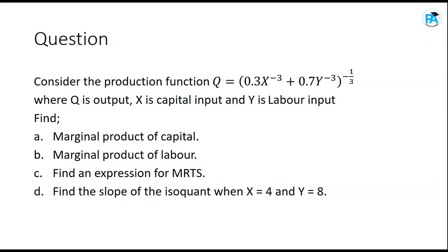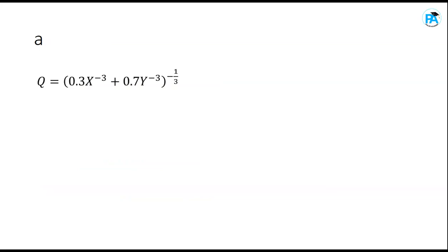We also need to (c) find an expression for MRTS, and (d) find the slope of the isoquant when x equals 4 and y equals 8. To find the marginal product of capital, we differentiate q with respect to x, because x represents capital.